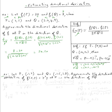Now for the next problem it's a little bit different. You'll be given p equal to (-1, 2) and q equal to (-1.5, 1.8), and we're supposed to approximate the directional derivative of f(x, y) = x²y at p in the direction of pq.